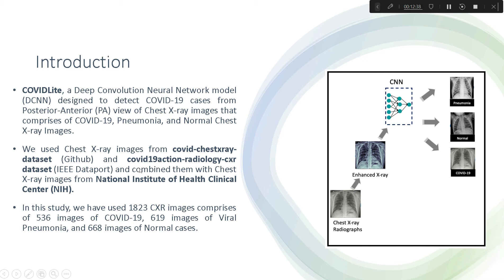We combined viral pneumonia cases from the NIH Clinical Center chest X-ray dataset available on Kaggle. In total, this project uses 1,823 chest X-ray images, comprising 536 COVID-19, 619 viral pneumonia, and 668 normal cases.